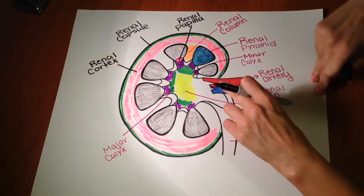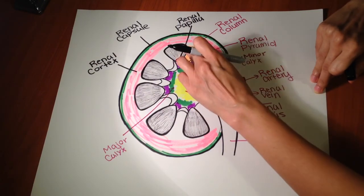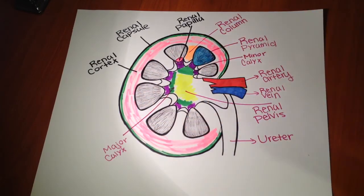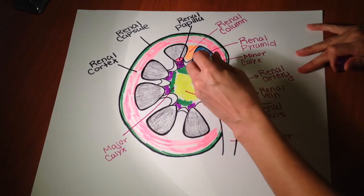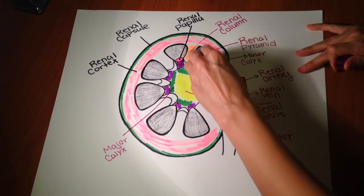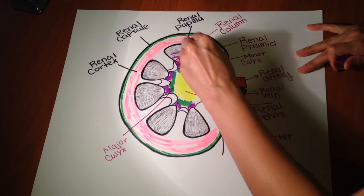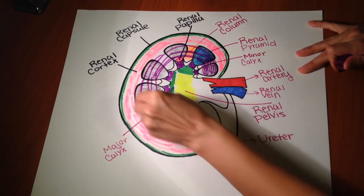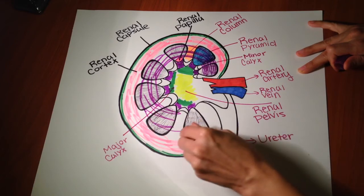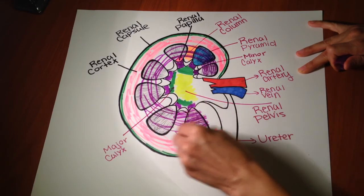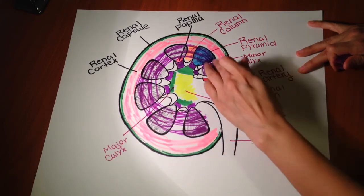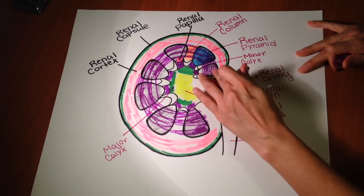And then where you have the renal pyramids and renal columns, that's where you have the renal medulla. So I'll use purple. So right here, this portion, this is going to be the renal medulla.